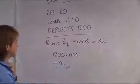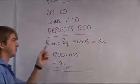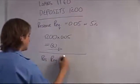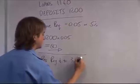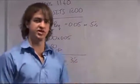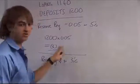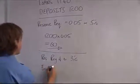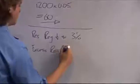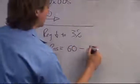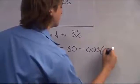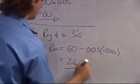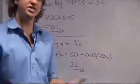Now let's say the reserve bank says the reserve requirement can decrease to 3%. If it decreases to 3%, what are your excess reserves going to be? Well, if it's only 3%, you know your required reserves need to be smaller than 60. Your excess reserves are equal to 60 minus 3% times your deposits, which equals 24. So you now have excess reserves of 24 units.